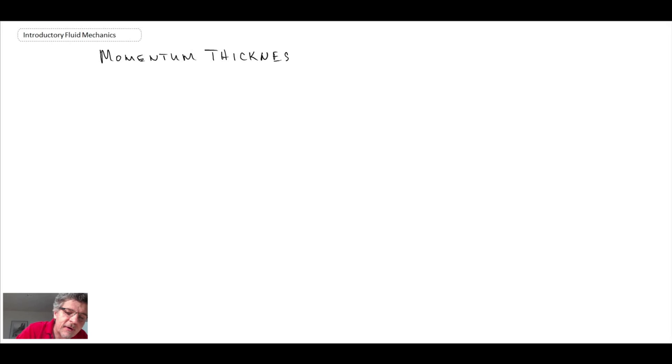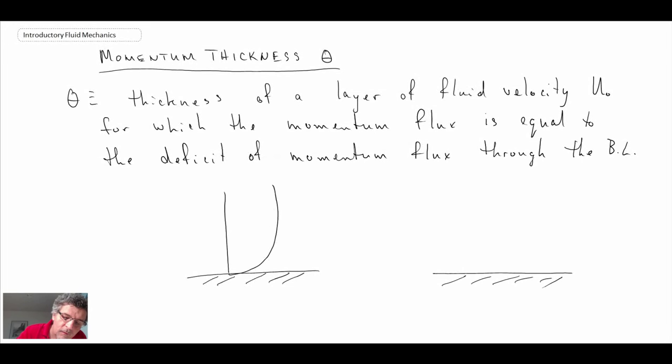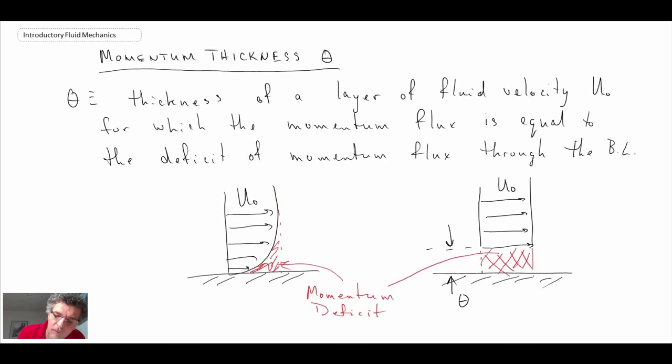This came out of the von Karman analysis we already saw. Momentum thickness theta, I'm drawing out a picture again. In terms of a diagram, this is what the momentum thickness represents. It would be the amount that the boundary layer would need to move away from the wall in order to have the same amount of deficit as what occurs within the region of velocity deficit due to the boundary layer.